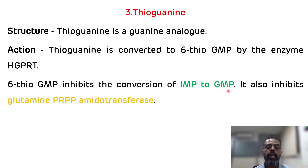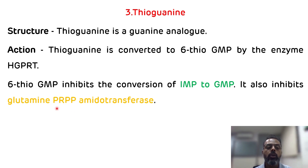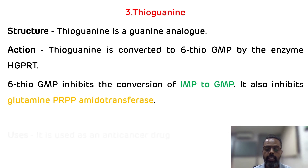IMP will not get converted to GMP (guanosine monophosphate), and thioguanine also inhibits glutamine PRPP amidotransferase. The uses of thioguanine: it is used as an anti-cancer drug.